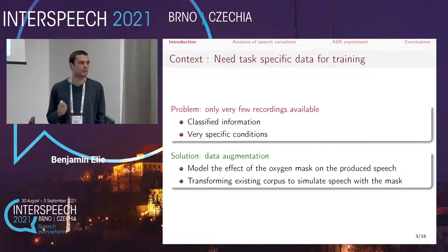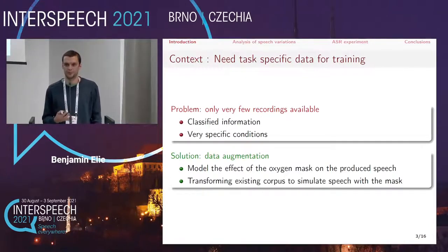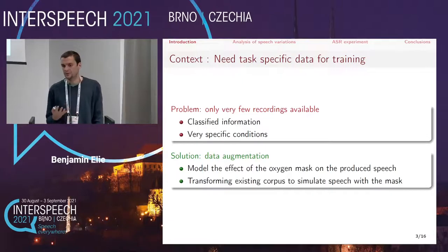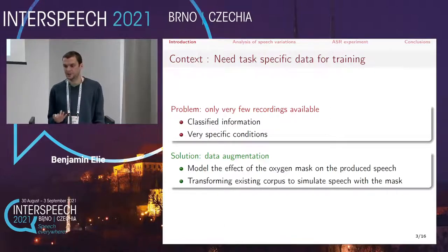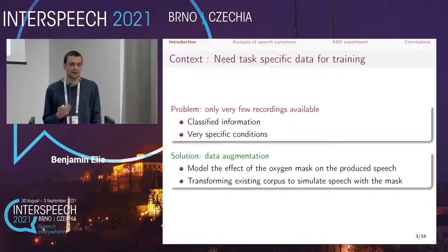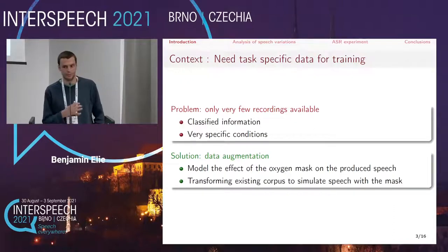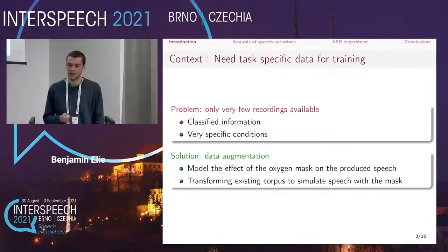In order to reduce this error rate, we should train our models with speech recorded with an oxygen mask. But it is very difficult, or even impossible, to collect enough data, for reasons including the confidential nature of military communications. So the solution we propose is to design data augmentation techniques dedicated to this task — first modeling the effect of the oxygen mask on produced speech, then defining transformation operators that can simulate speech with a mask, transforming normal speech so that its characteristics resemble those of masked speech.